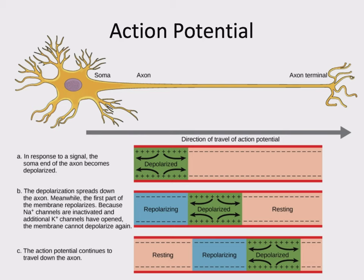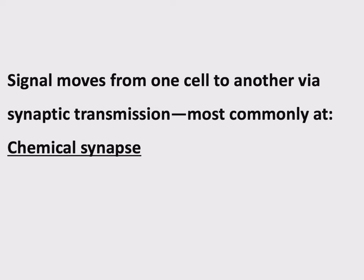All of this action potential discussion was within a single cell — moving information from one end of the neuron to the other. There is another step: this signal has to pass from one neuron to the next neuron, from one cell to another cell. To do that, we need a completely different mechanism. The signal moves from one cell to another via synaptic transmission.